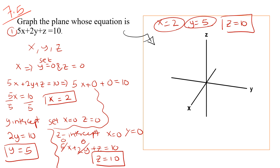Let's go with increments of two. So here at two and four, the x-intercept is at 2, so the point is here. For the y-intercept, going two, four, six — five is approximately here. And for the z-intercept, going two, four, six, eight, ten — ten is here. Now just joining the points together.